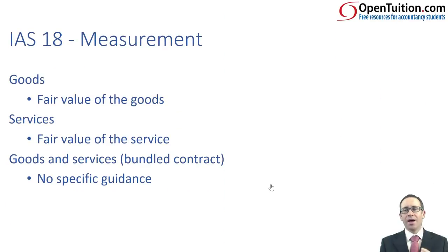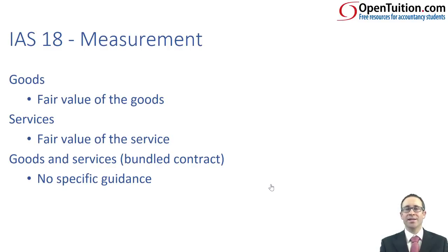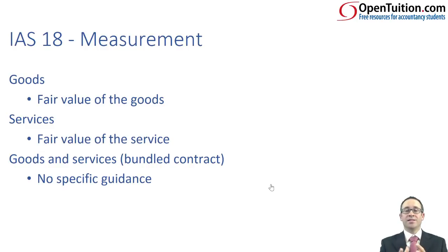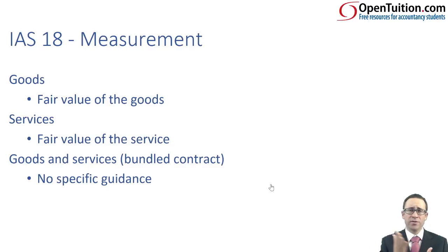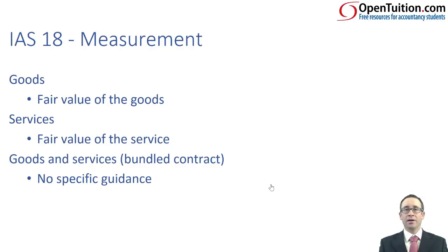In terms of measurement, there was a lack of detail. Goods were measured at the fair value of the goods, but IAS 18 was developed way before IFRS 13, so there were no specific details with regards to fair value of the goods. Similarly, nothing was specified regarding the fair value of the service. With a service provided over a period of time, there might be some discounting involved — but whether we give consideration to that under IAS 18 was another area of difficulty.